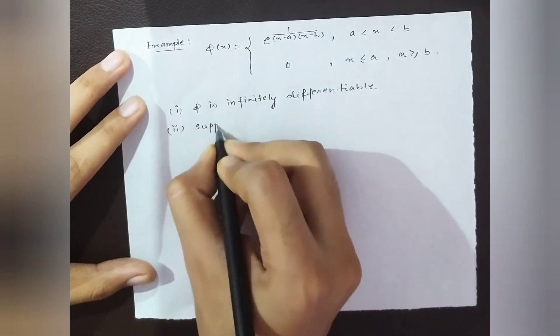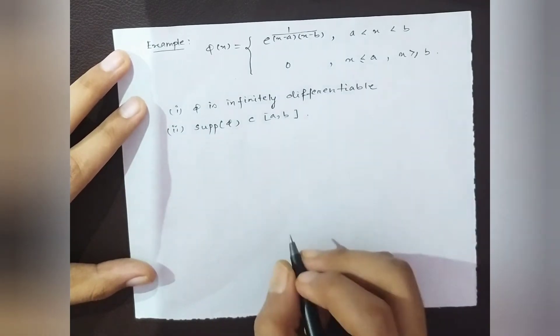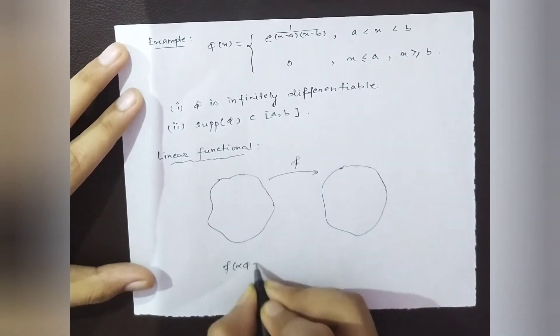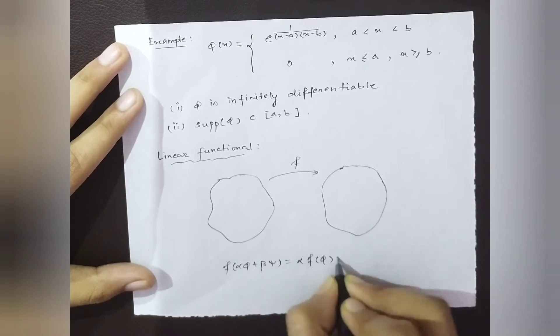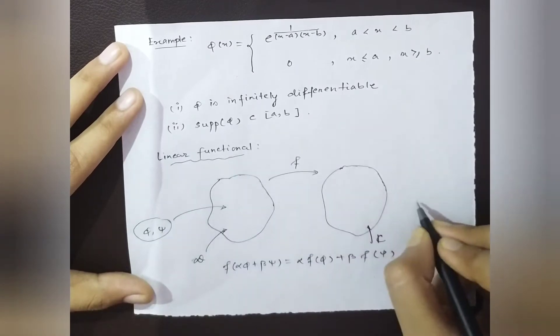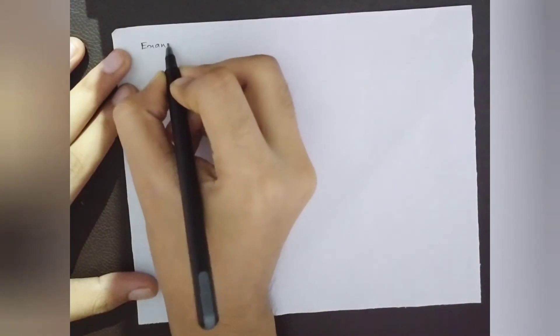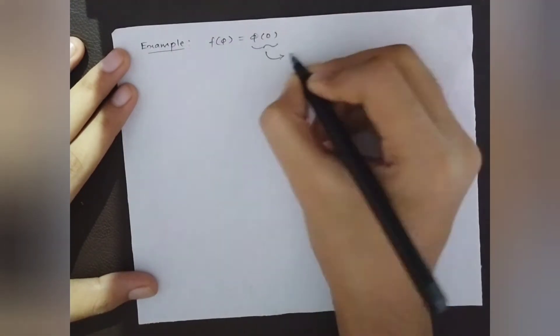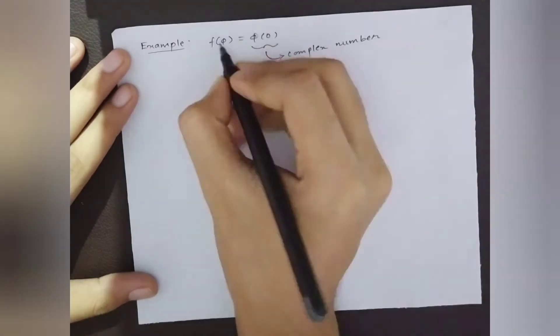A linear functional is a map from the space of test functions to the complex numbers satisfying the given condition, where φ and ψ are test functions and α and β are any complex numbers. An important example of a linear functional is where the test function φ is mapped to the number φ(0).